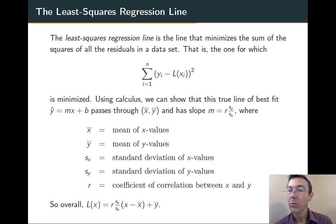And that least squared regression line is going to have slope r times sy over sx, where r is the coefficient of correlation, sy is the standard deviation of the y values, and sx is the standard deviation of the x values. So overall, we have an equation for a least squared regression line given here on the bottom.